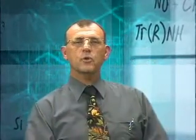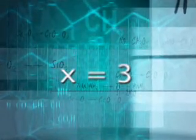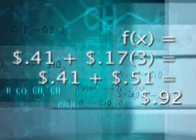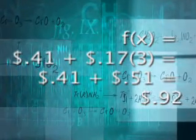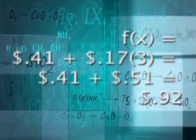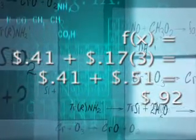Our card exceeds the 41 cent standard by 3 ounces, 4 minus 1. So x equals 3. Solve for f of x. f of x equals 41 cents plus 17 cents times 3 equals 41 cents plus 51 cents equals 92 cents. It will cost 92 cents to mail our card.